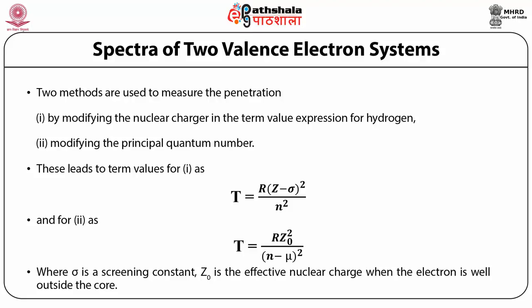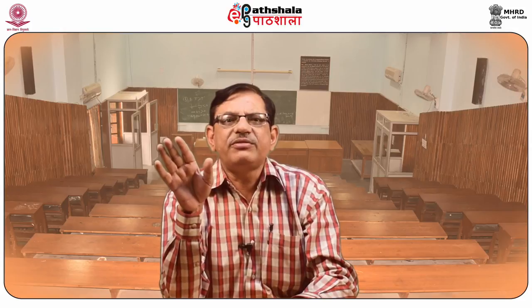From the spectrum, ignoring fine structure, it is observed that the triplet sharp and diffuse series share one common limit, and singlet sharp and diffuse series share another. The frequency difference between the common limit of triplet sharp and diffuse series and the triplet principal series equals the frequency of the first member of the triplet diffuse series — this is called the Ritz combination law. The same holds even when fine structure is taken into account, and it applies to singlet series as well.